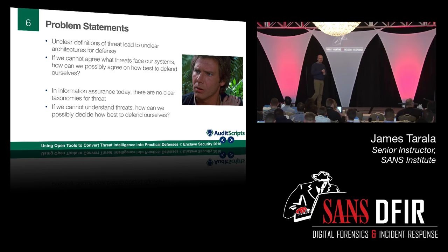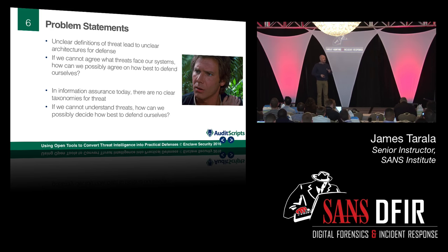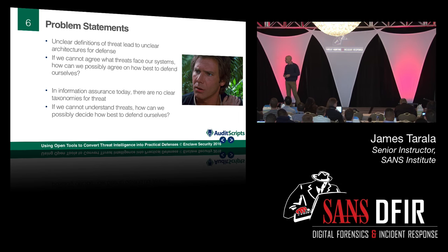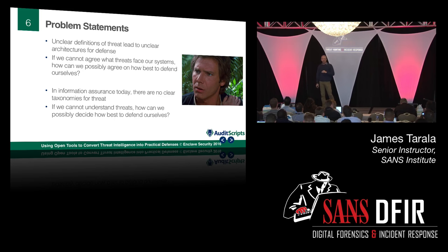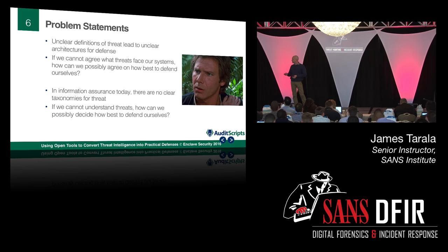Unclear definitions of threat lead to unclear architectures for defense. If we don't know what we're trying to defend against, it's very difficult to agree on how we'll actually defend ourselves. There are also limited taxonomies for threat — as of about a year and a half ago, there were literally zero taxonomies of threat available. Over the last 18 months, three have emerged: we run one, NISA has run one, and MITRE has done additional research. This gives us more tools and information for hunting and defense.